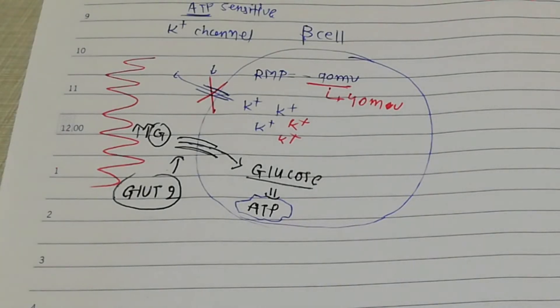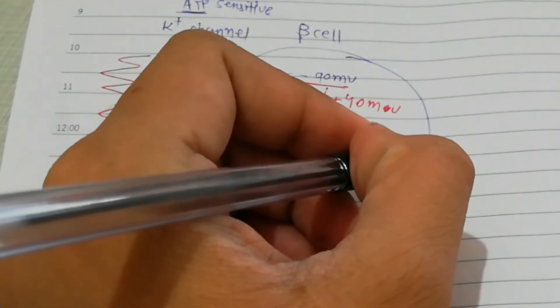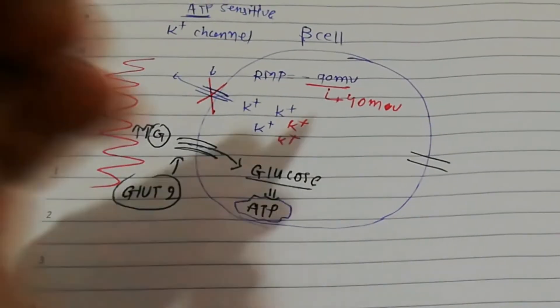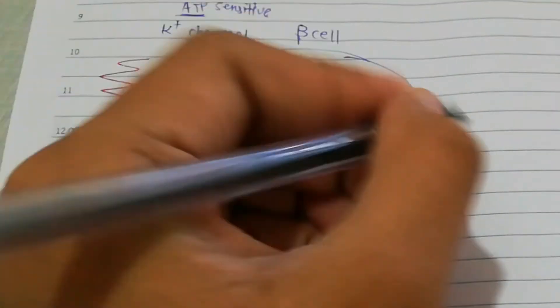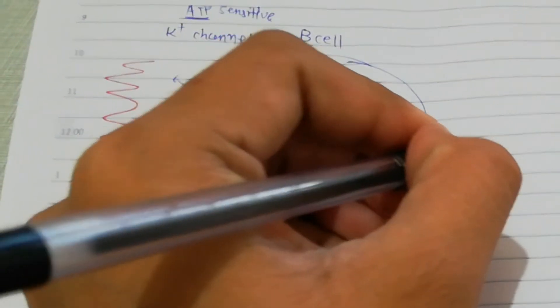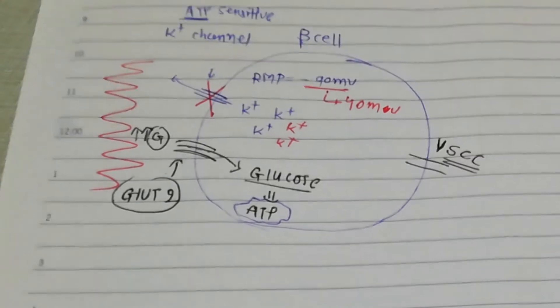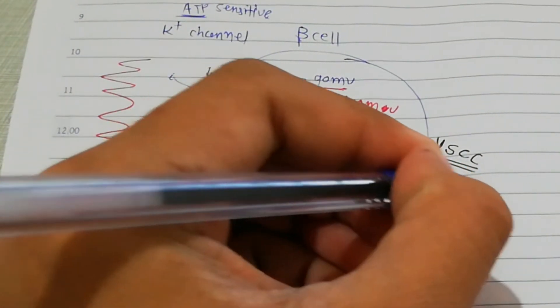At minus 40 millivolts, the calcium channel opens. This is the voltage-sensitive calcium channel — VSCC. Calcium ions now enter the cell from outside.